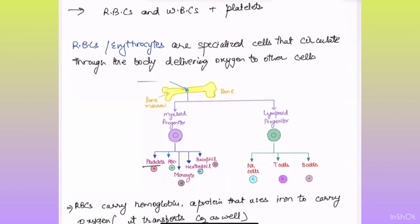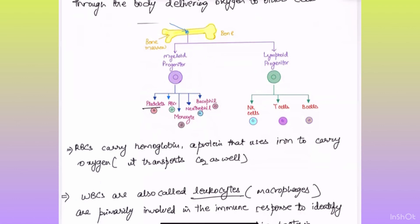Now let's see how blood cells are formed. From the bone marrow, bone marrow has the stem cells. These stem cells then differentiate into myeloid progenitor and lymphoid progenitor, two different families of blood cells.